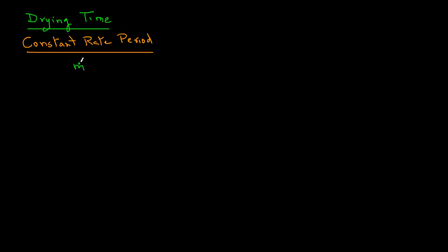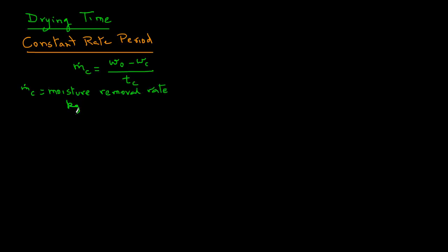We will begin by writing this expression: m.c equals w0 minus wc divided by tc. Here, m.c represents the moisture removal rate during the constant rate period. The units are kilograms of water per second per kilogram of dry solids, so moisture removal rate is on a dry basis.